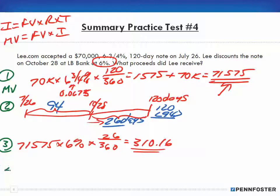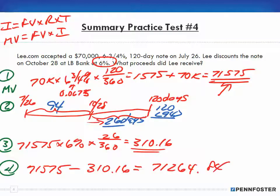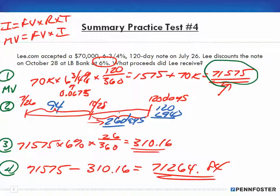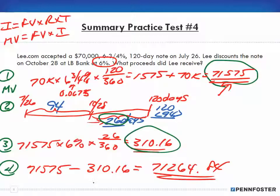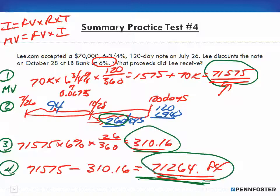Number four, to figure out the proceeds, we take the $71,575 face value and subtract the discount amount of $310.16. That gives us our proceeds of $71,264.84. So number one is $71,575; number two is 26 days; number three is $310 discount amount; and number four is the proceeds of $71,264.